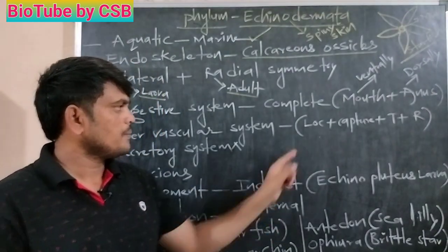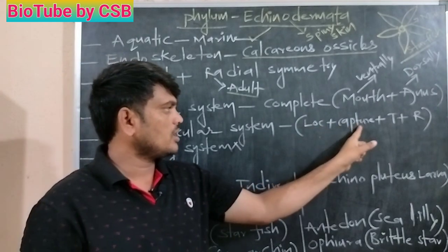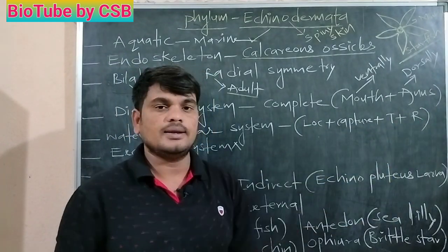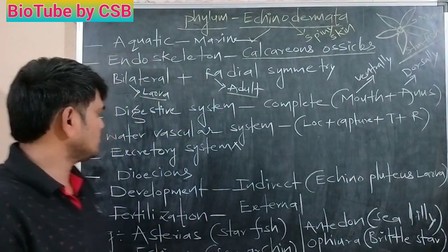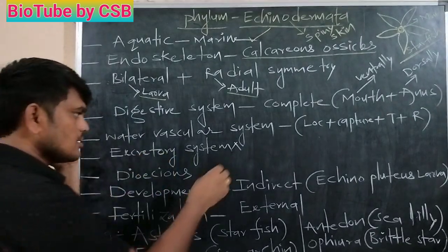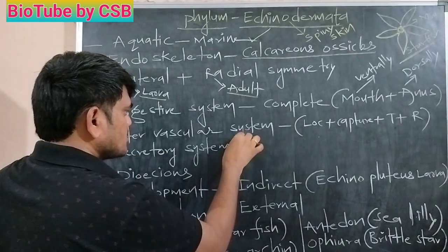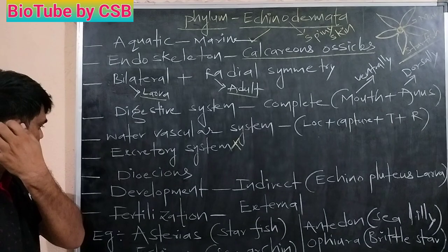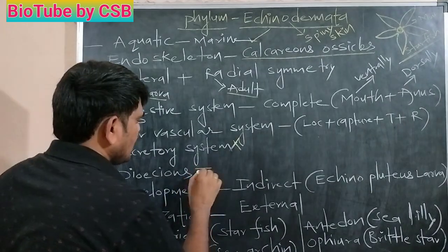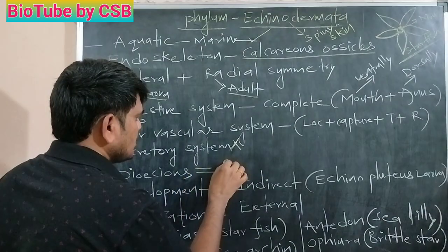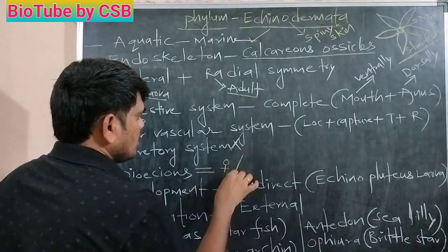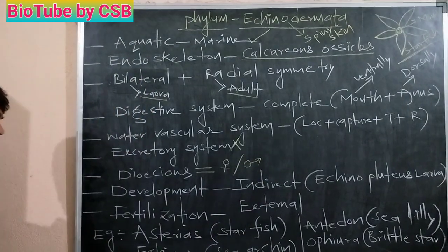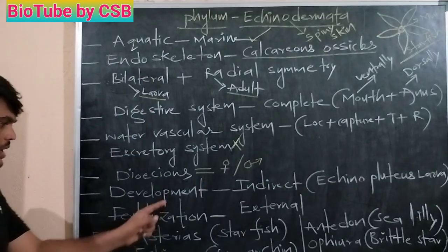The water vascular system is present — it is used for locomotion, capturing food, transport, and respiration. The excretory system is absent in Echinodermata.